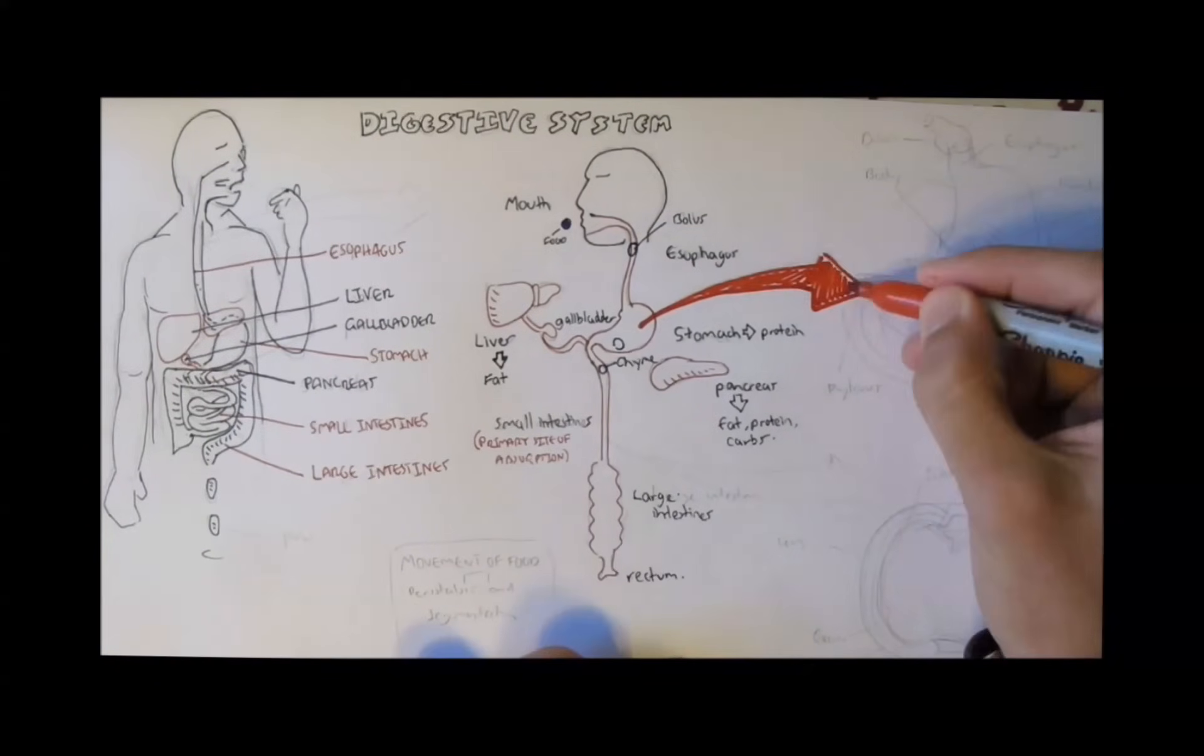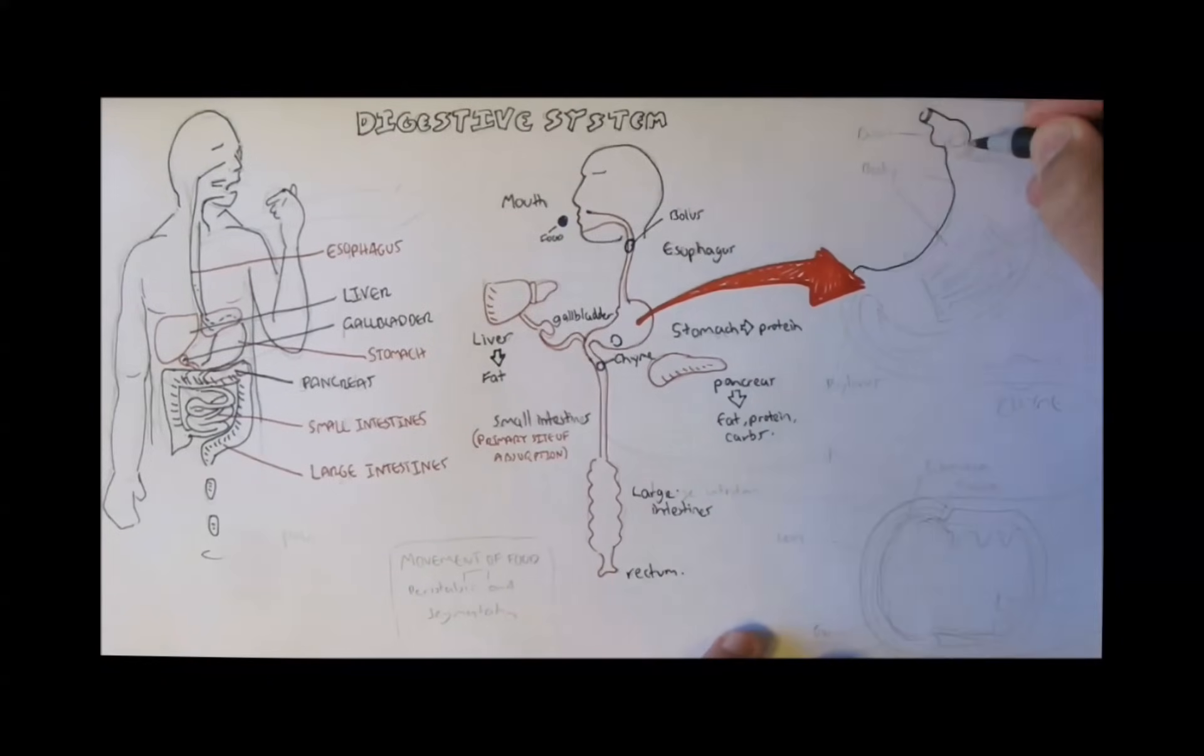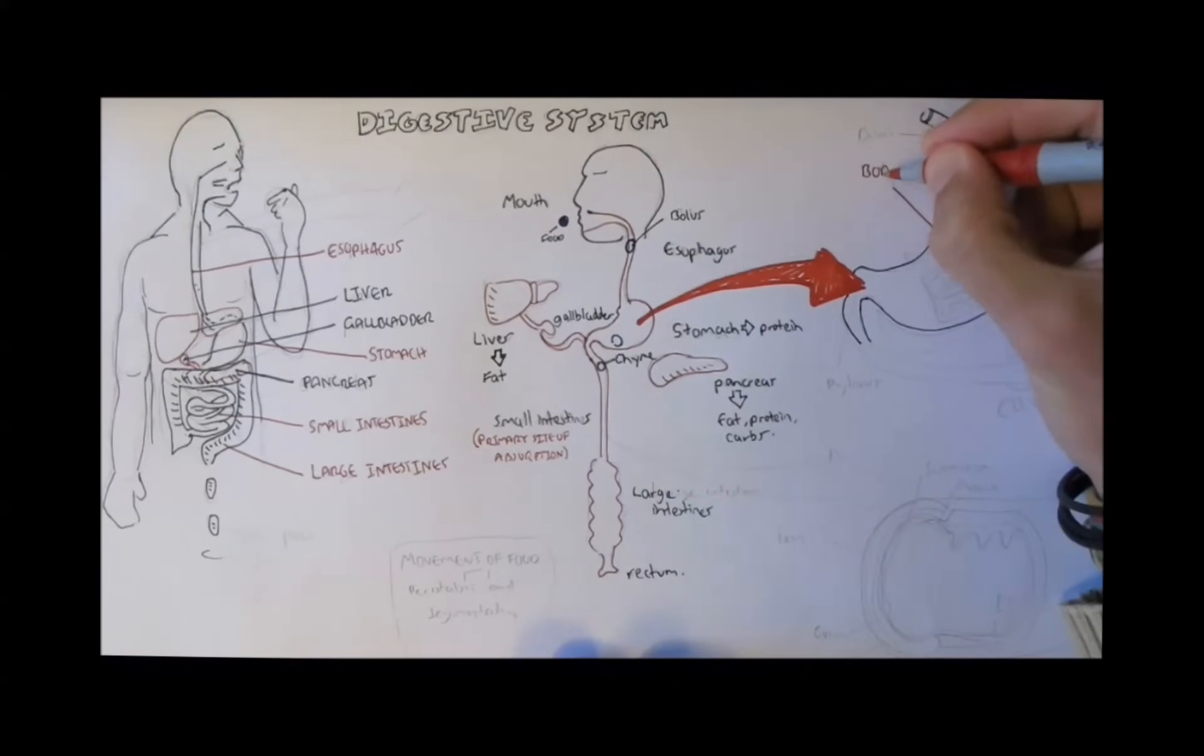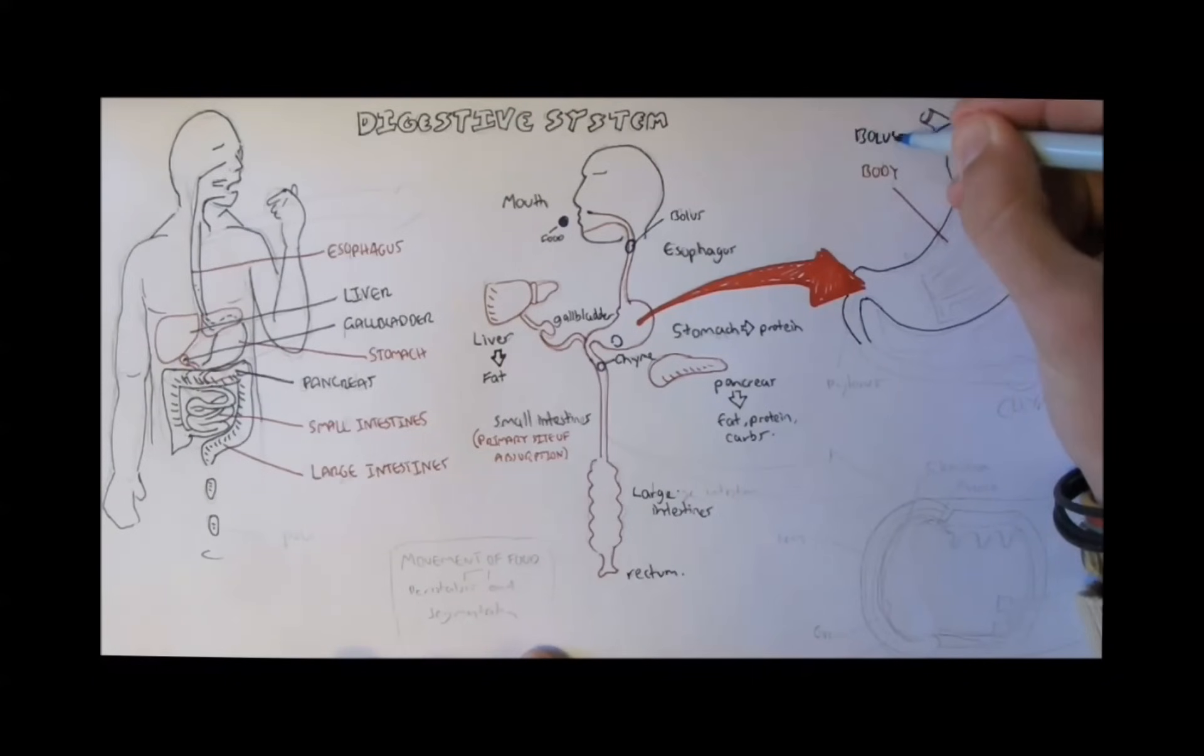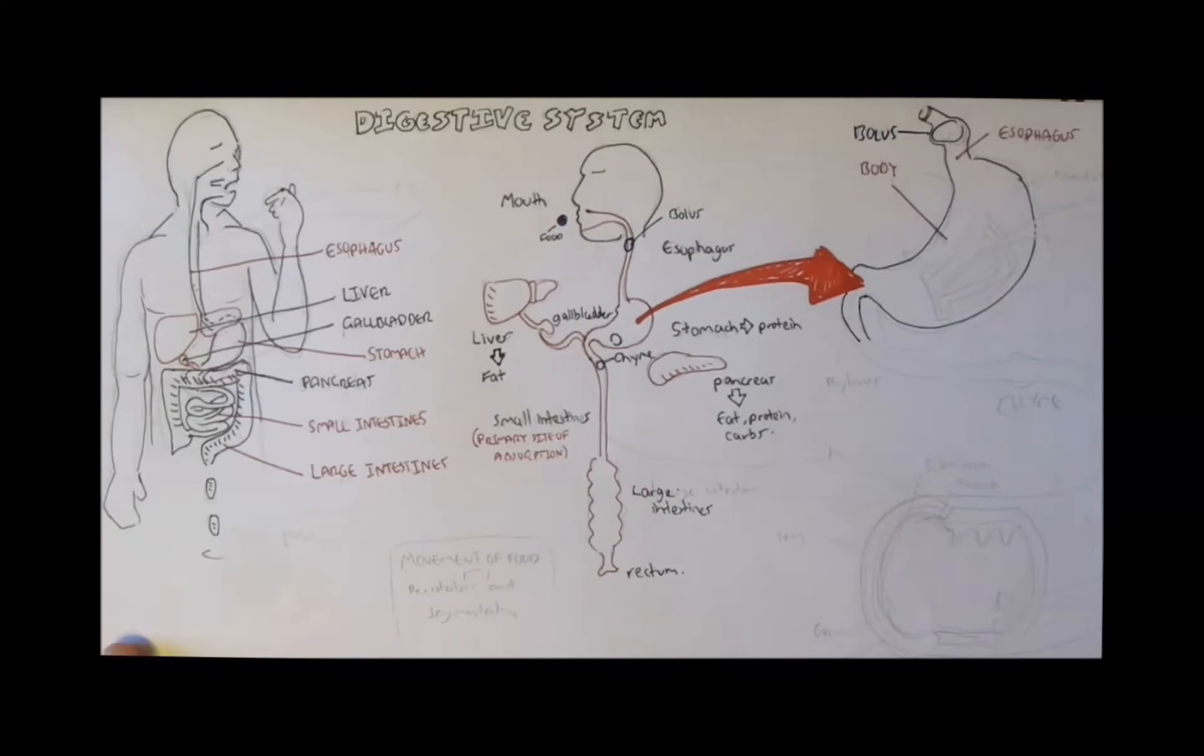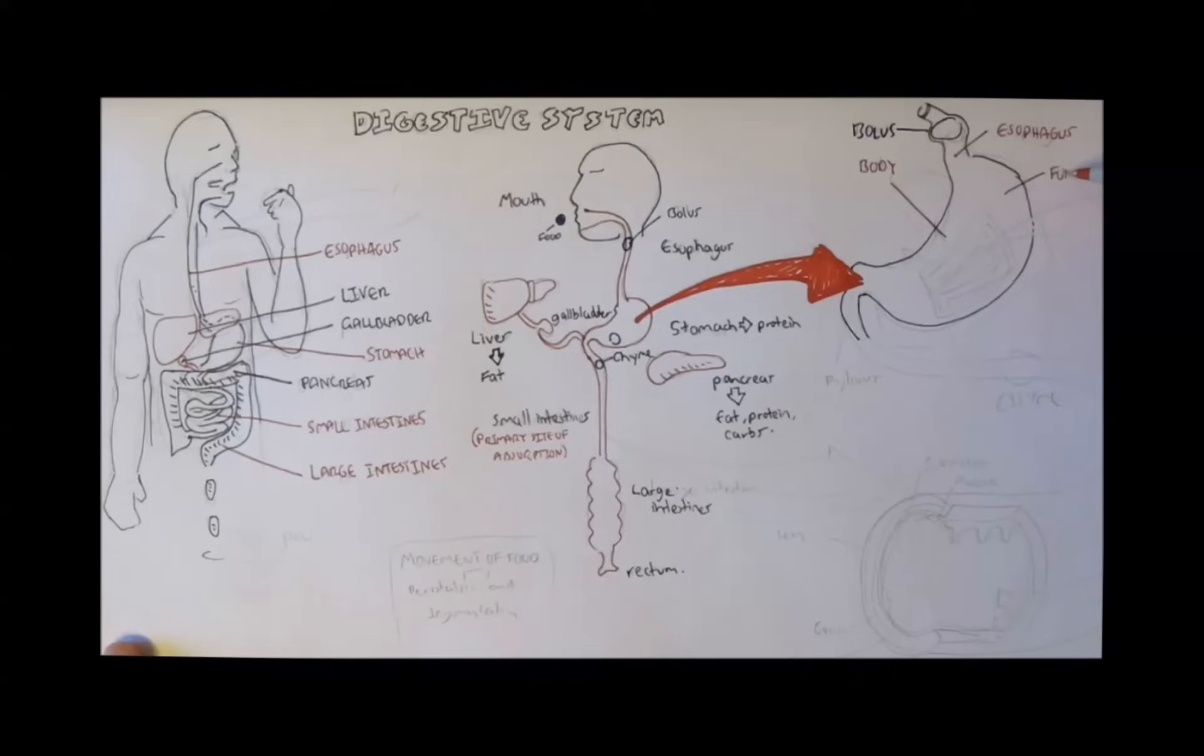So we will go over the stomach anatomy in a bit more detail. The stomach as we saw looks something like this. The middle area is referred to as the body. And then we have the esophagus at the top bringing the bolus, the food, down to the stomach.